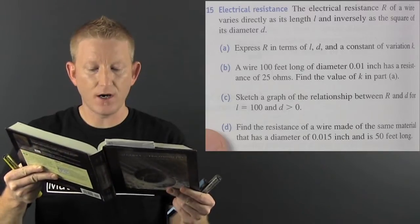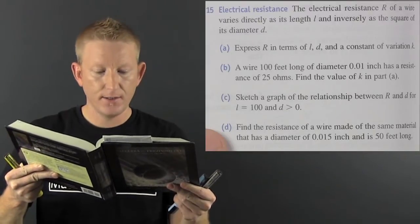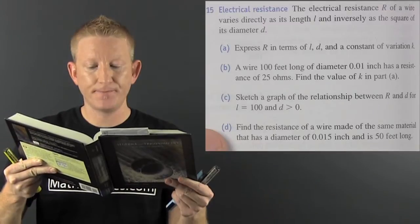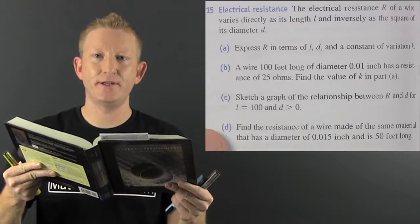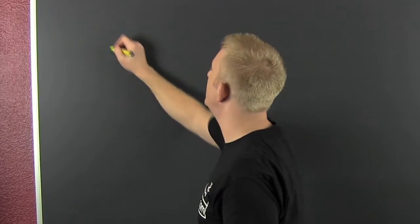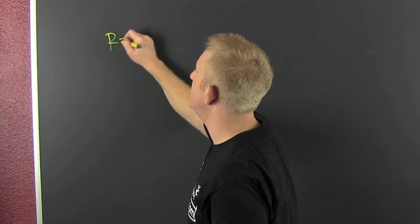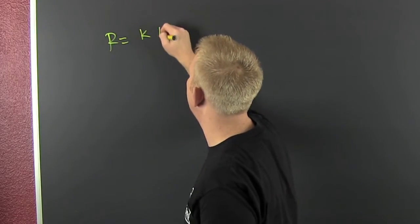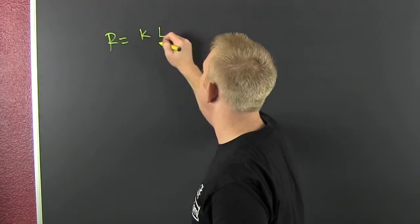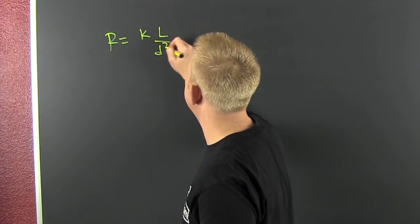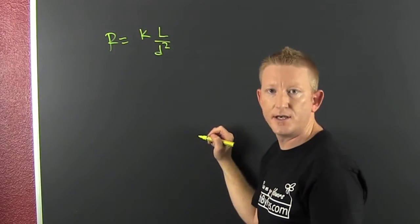Electrical resistance R of a wire varies directly as the length and inversely as the square of the diameter, D. And here we go! So, the resistance is directly proportional to the length of this wire and inversely proportional to the distance squared.